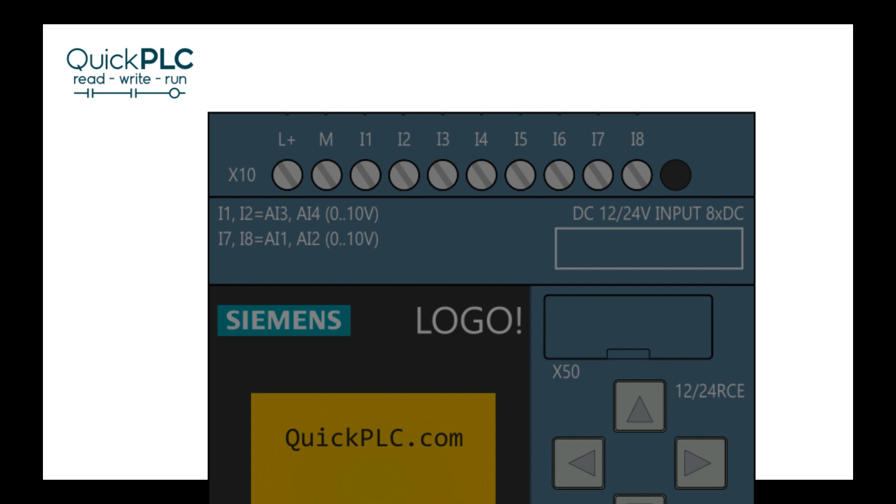The DC only input type have the advantage that up to four of the basic module inputs can be configured as analog inputs. In addition, the four non-analog DC inputs are high speed and can read up to five kilohertz.